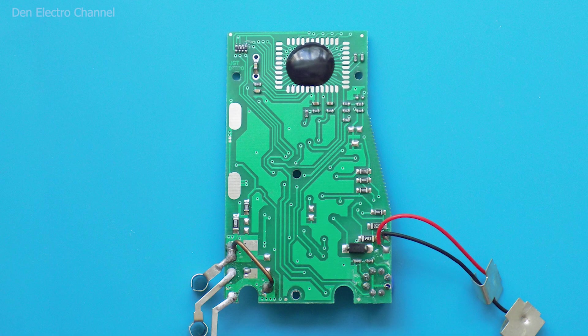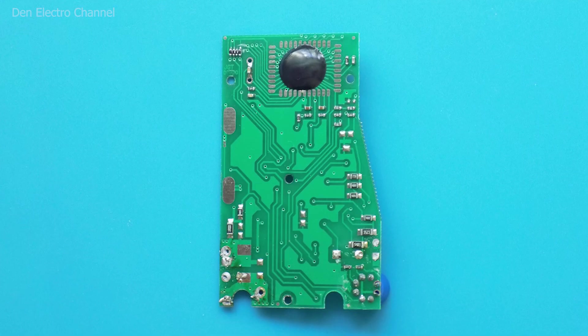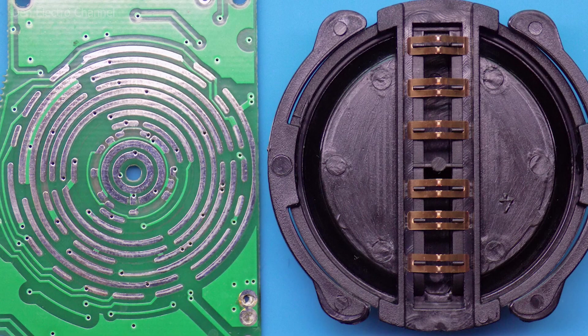You need to remove everything unnecessary from the board so that it is even and nothing sticks out. Now let's look at the board from the back side. There are many contacts on it.